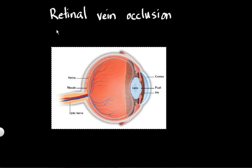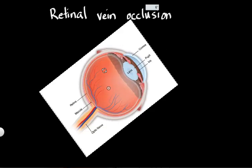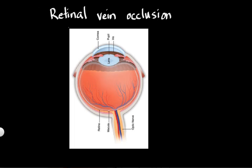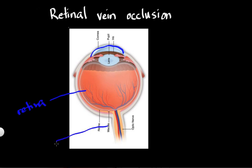Let me try to explain what a retinal vein occlusion is. If I take this picture of an eye and rotate it like so — I'll make it more obvious why I'm flipping this eye kind of upside down. If we review some basic structures here: this is the front of the eye, called the cornea. This structure here is called the lens. Then we have the retina, and back here the optic nerve.